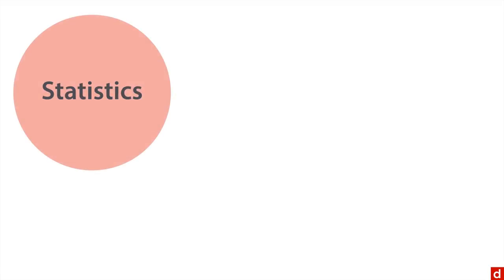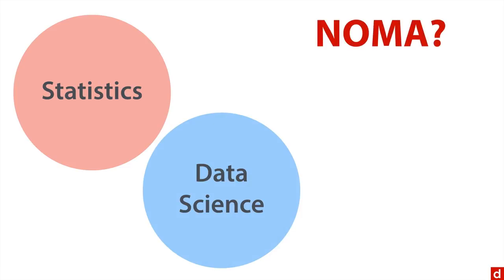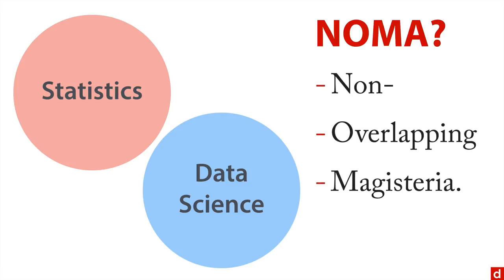Put a little circle here and we'll put data science. And to borrow a term from Stephen Jay Gould, we can call these non-overlapping magisteria or NOMA. So you think of them as separate fields that are sovereign unto themselves with nothing to do with each other. But you know, that doesn't seem right.